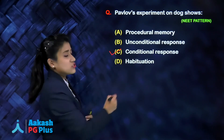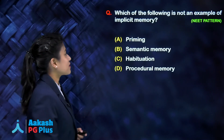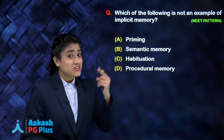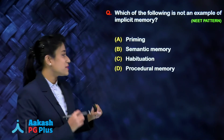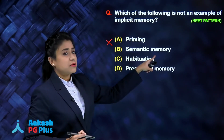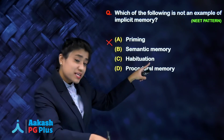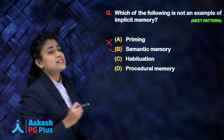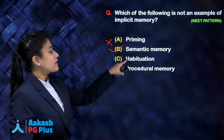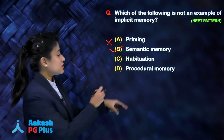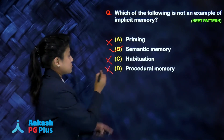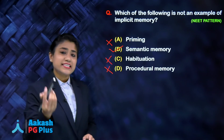Pavlov's experiment on the dog shows a conditioned response. Now, which of the following is not an example of implicit memory? Think about the types of implicit memory. Priming? Yes, so it cannot be the answer. Semantic memory? No — it comes under explicit memory. So the answer is B: semantic memory. It is not a type of implicit memory; it is a type of explicit memory. Habituation and procedural memory are both types of implicit memory, so they are not the answer.